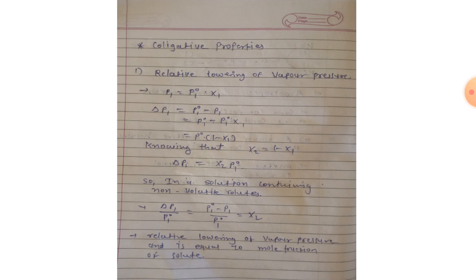This completes the topic of non-ideal solution. Our next topic is colligative properties. Colligative properties depend on the number of solute particles, irrespective of their nature. There are four types: first, relative lowering of vapor pressure of the solvent; second, depression of freezing point of the solvent; third, elevation of boiling point of the solvent; and fourth, osmotic pressure.